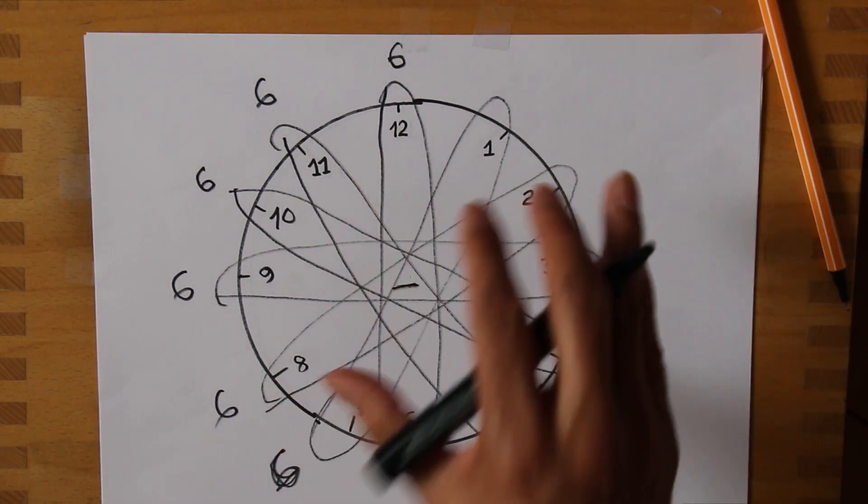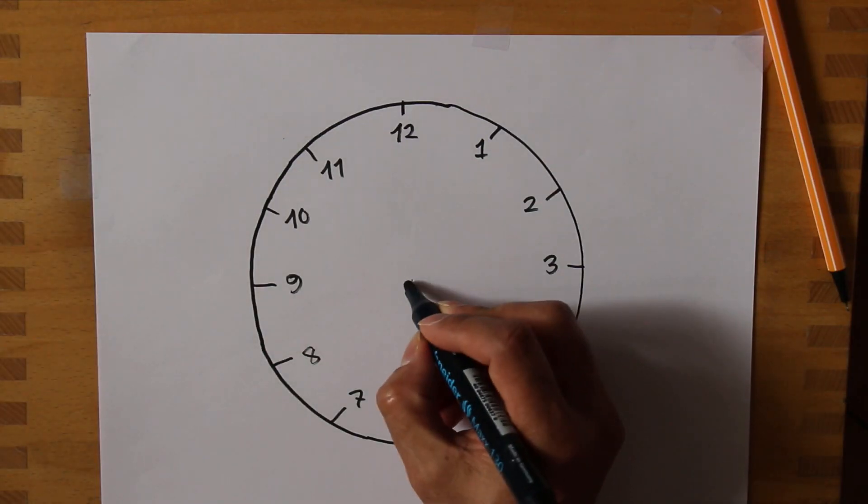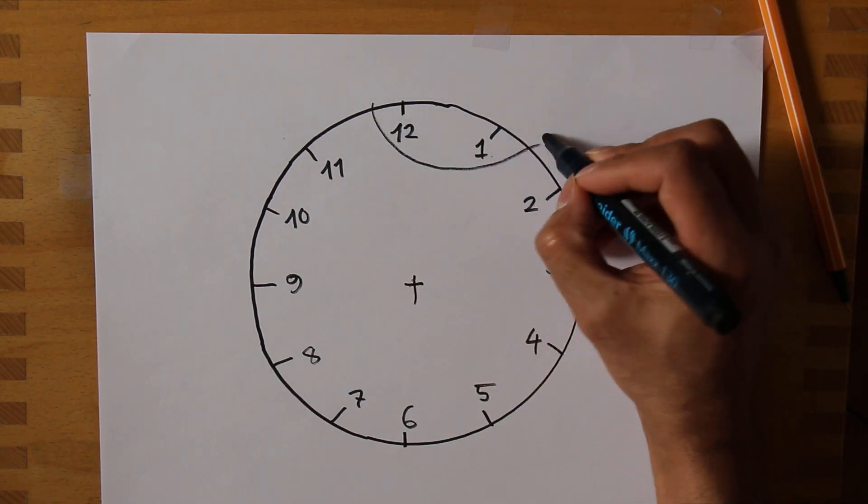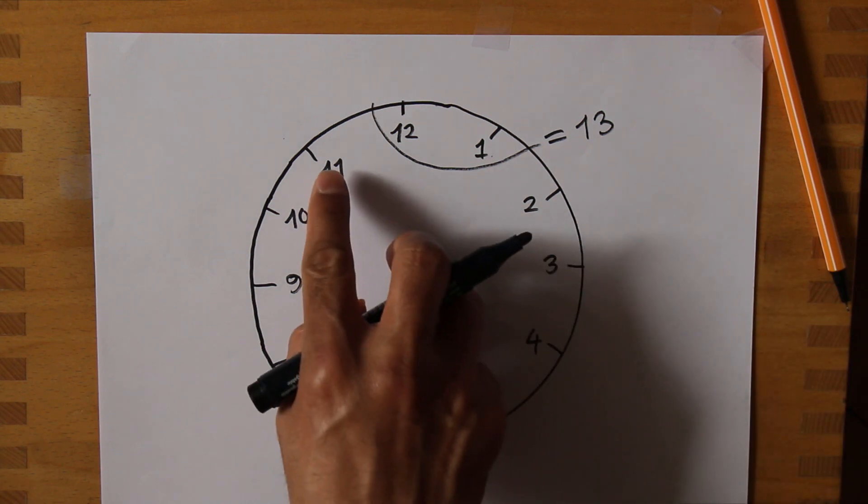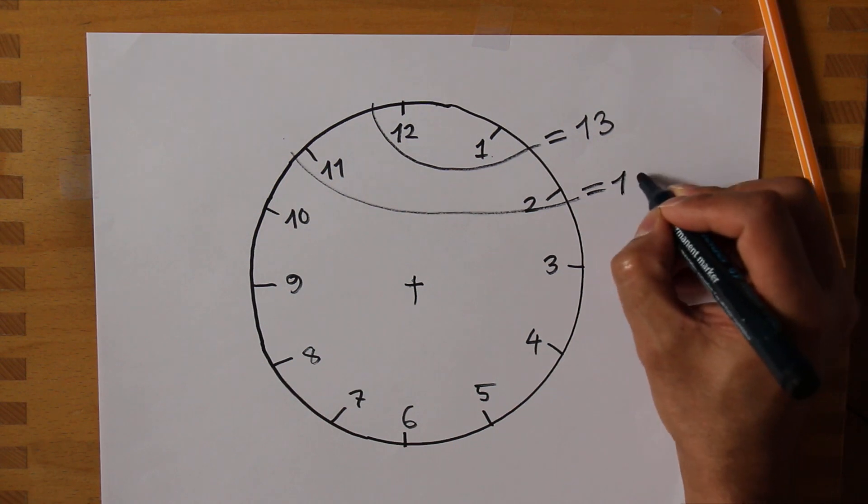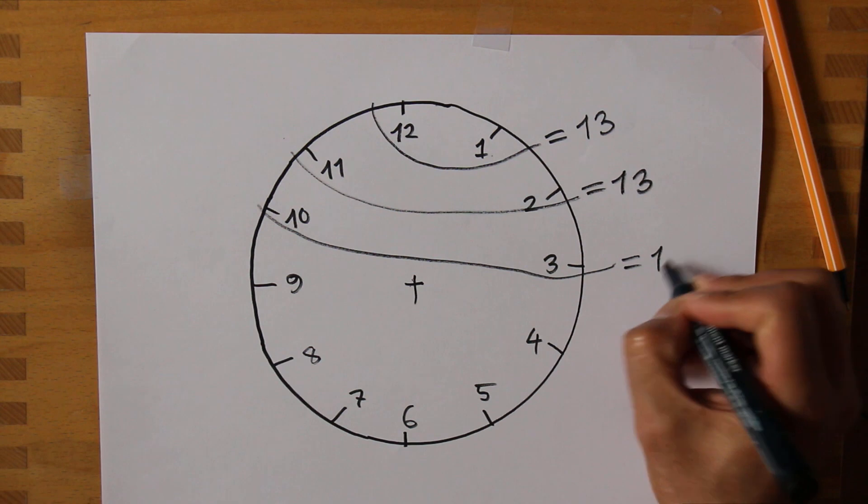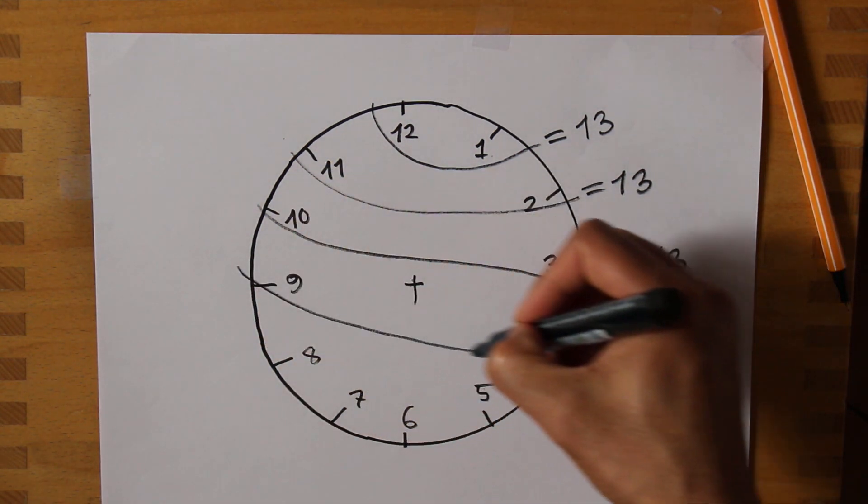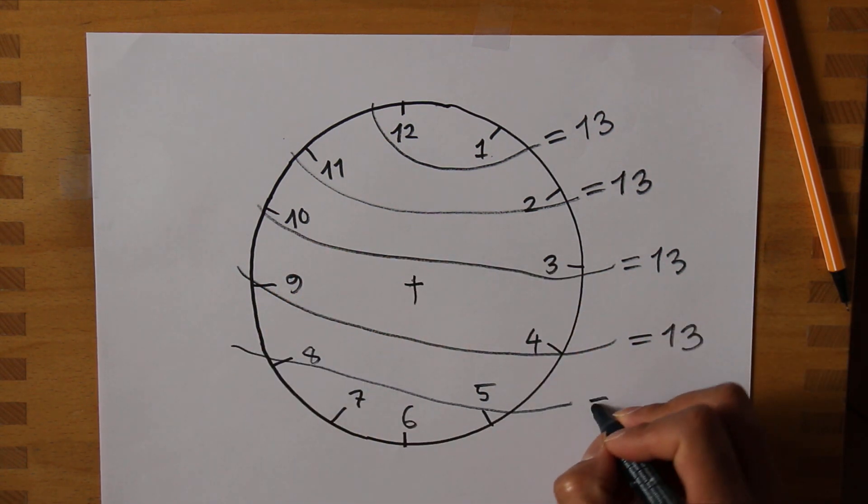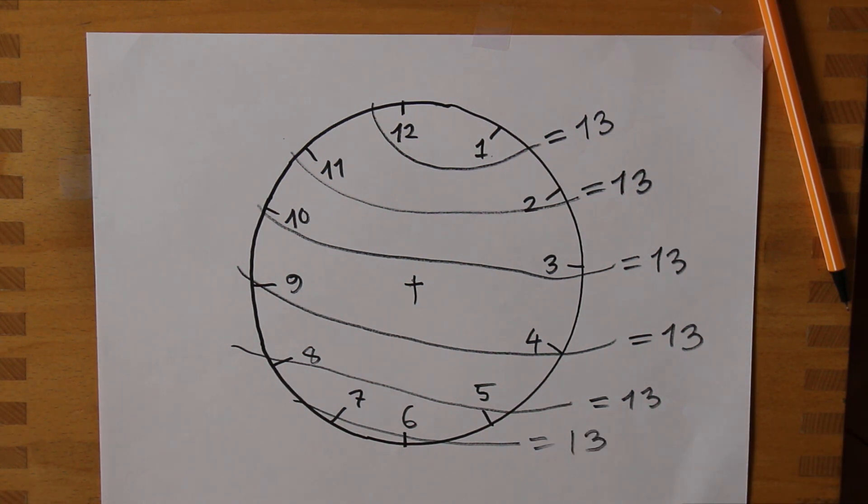You've seen this analog clock many times in your life. Have you ever thought this type of pattern could happen? If I add adjacent numbers: 12 plus 1 equals 13. 11 plus 2 is also 13. 10 plus 3 is also 13. 9 plus 4 is also 13. 8 plus 5 is also 13. 7 plus 6 is also 13. It's really interesting.